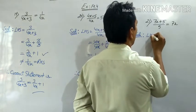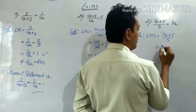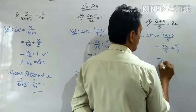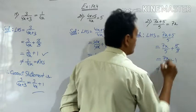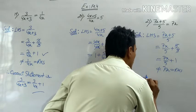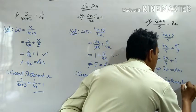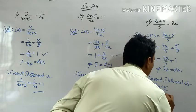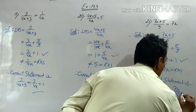Last sum of the chapter: LHS is equal to 7x plus 5 upon 5, which can be separated as 7x upon 5 plus 5 upon 5. The 5s will cancel, so you get 7x upon 5 plus 1. This is not equal to the right hand side. So the correct statement is: 7x plus 5 upon 5 is equal to 7x upon 5 plus 1.